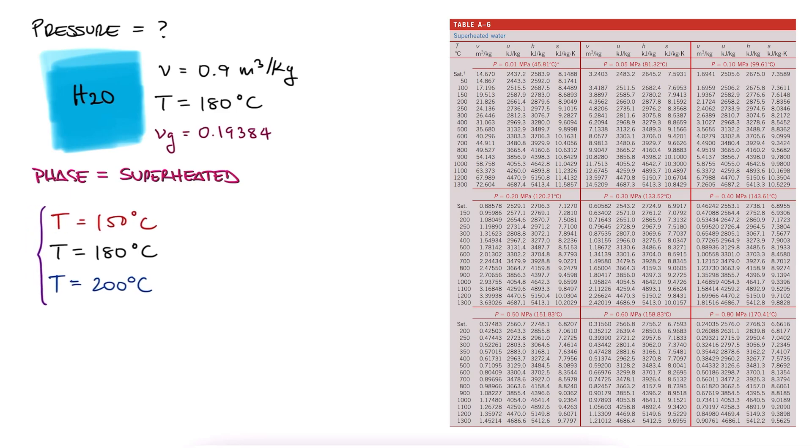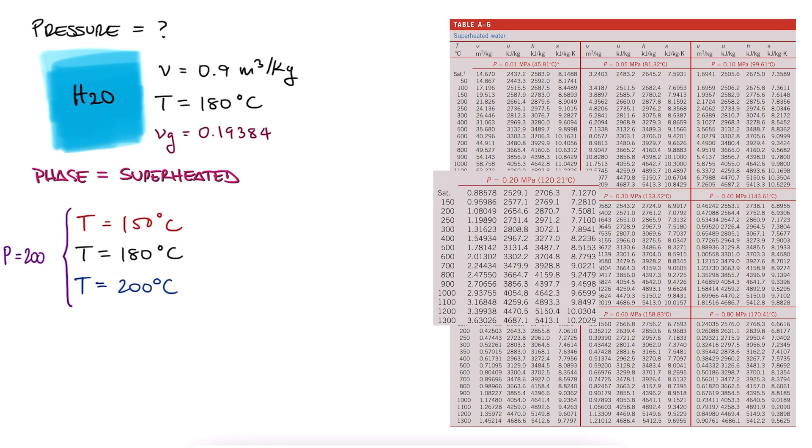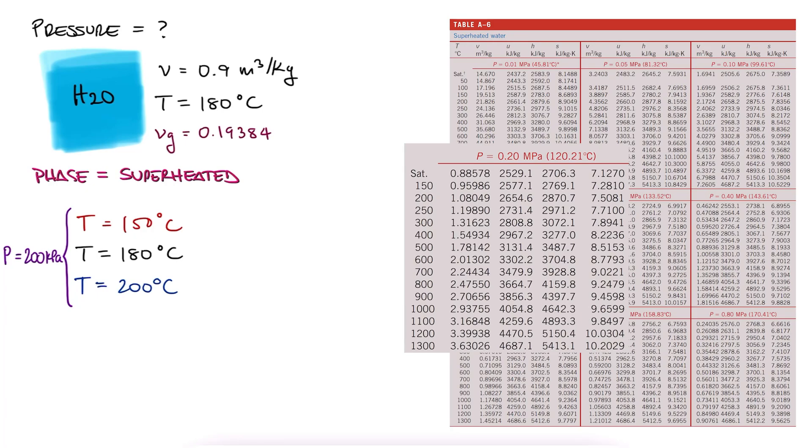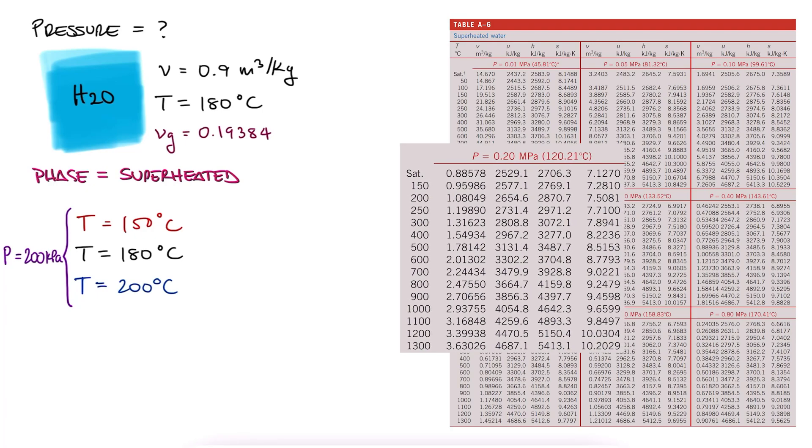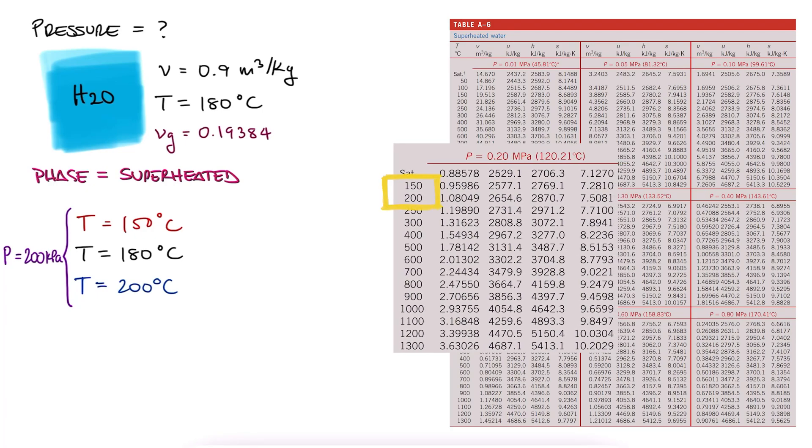If you pay close attention, for a pressure of 200 kilopascals and a temperature of 180, meaning somewhere between 150 and 200, we'd have a specific volume just above 1 cubic meter per kilogram, or at least between 0.96 and 1.08. This is close to what we're looking for, but still higher than the 0.9 we have.